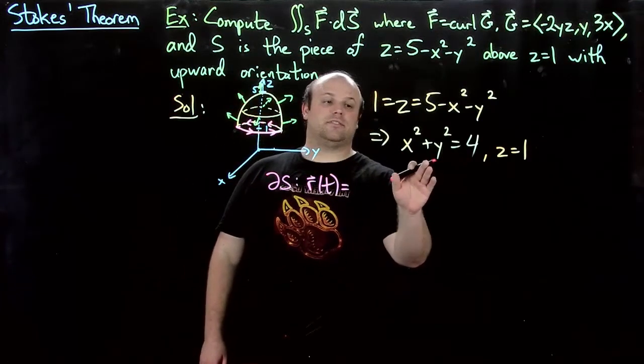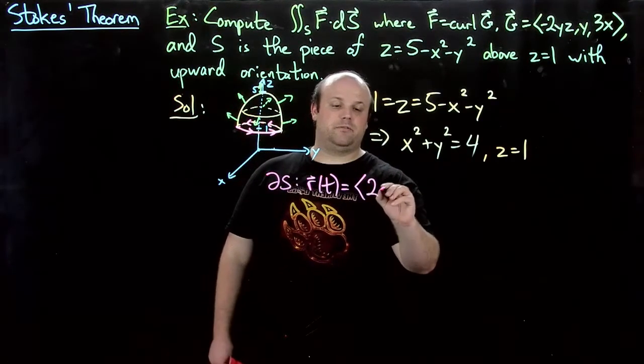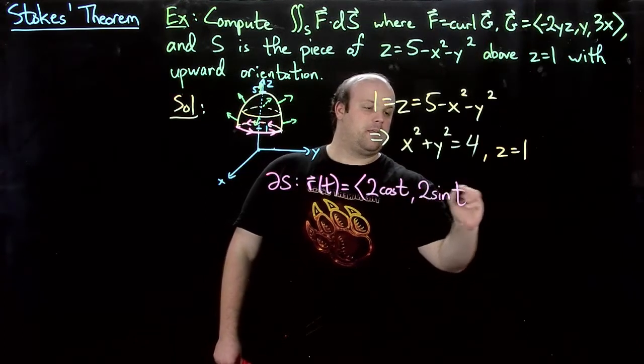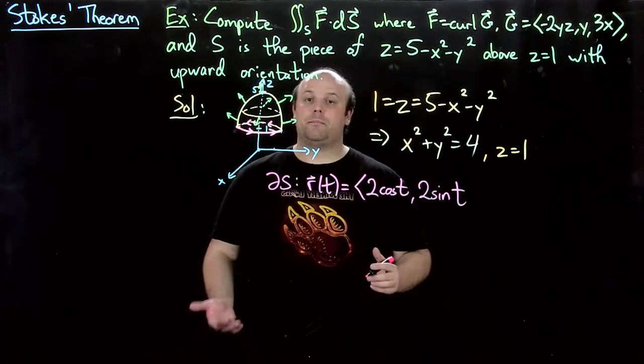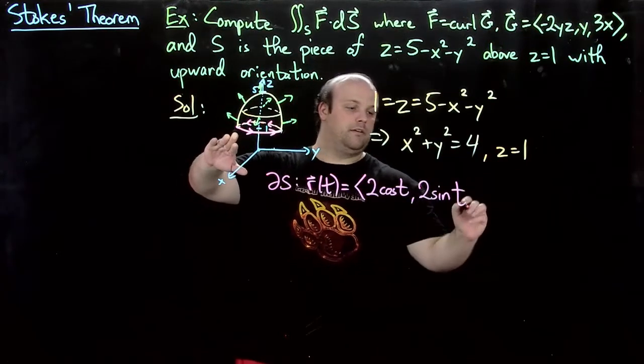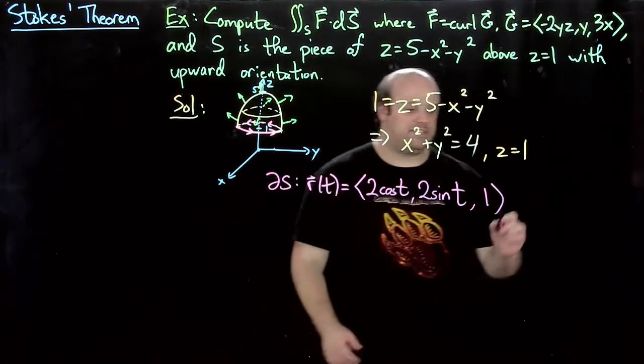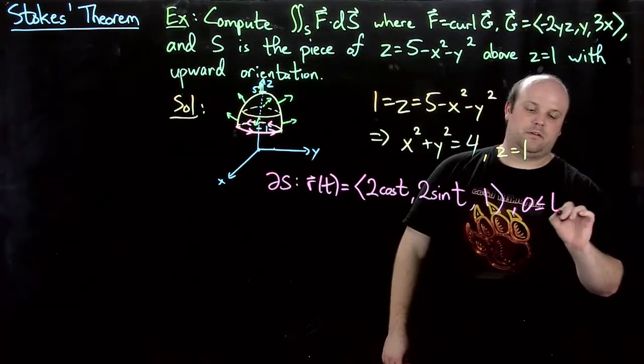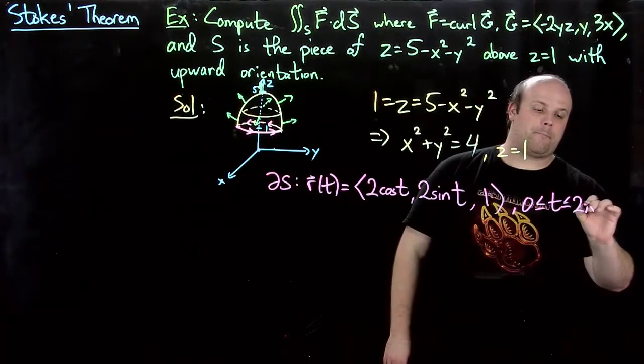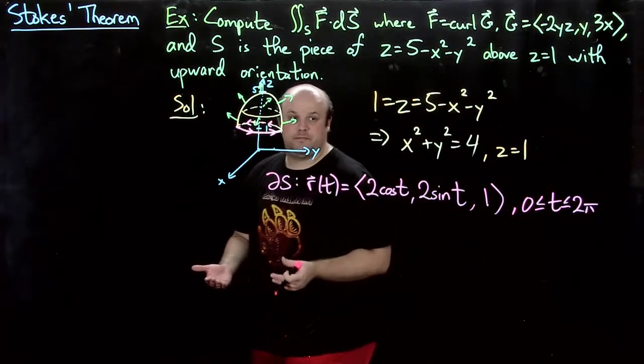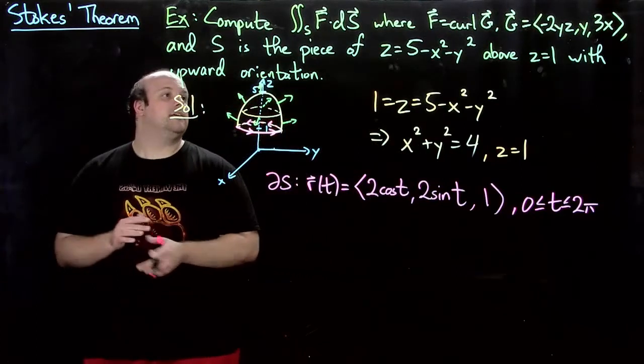So to parameterize that boundary, the boundary of S is given by r of t. Now the radius of the circle is 2, so we get 2 cosine t, 2 sine t. But then what about z? Well, remember here z is always 1. So this is a parameterization of the boundary. And of course, t goes from 0 to 2π. So that shouldn't be too tough. Hopefully that all makes sense.